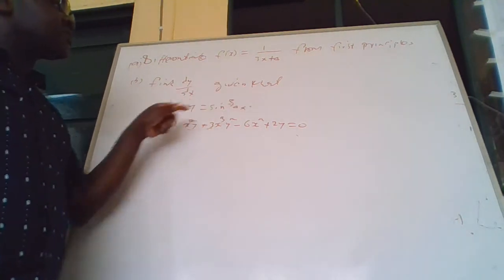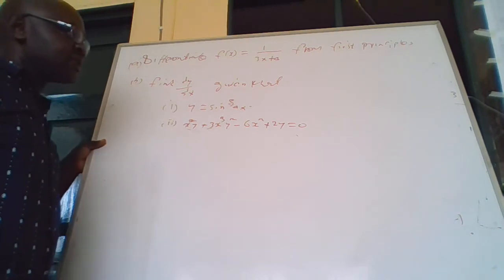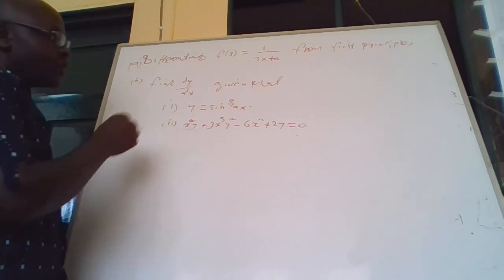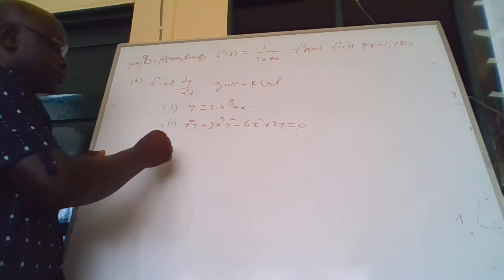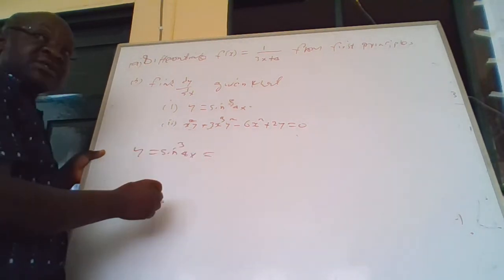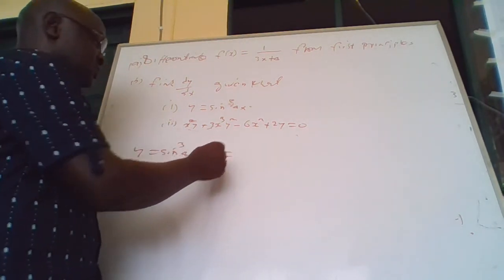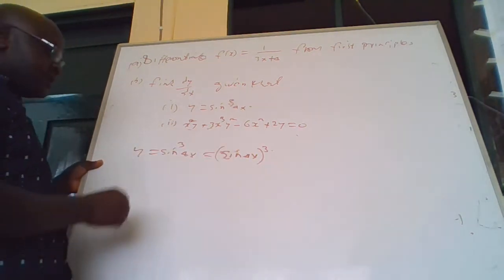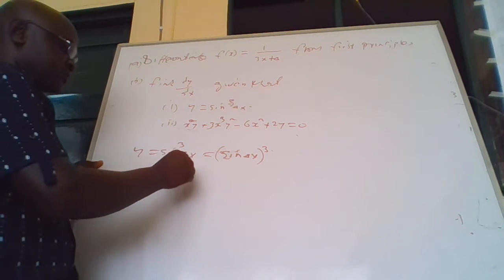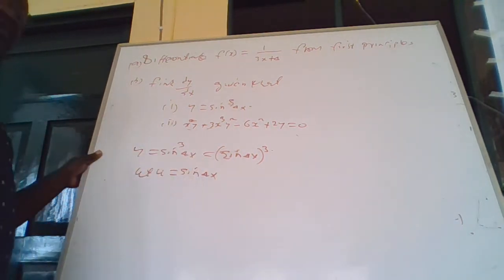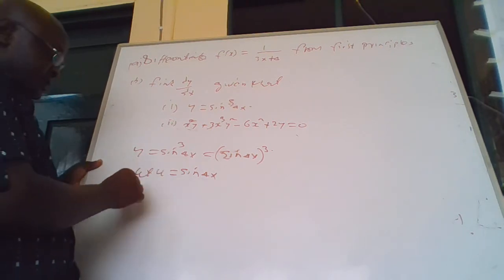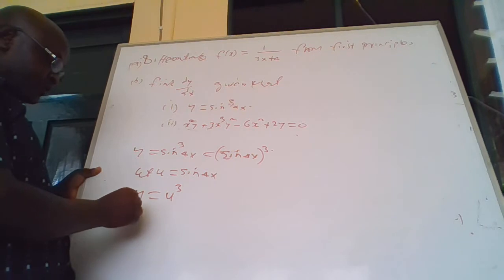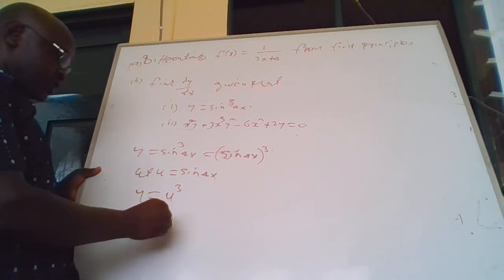Now find dy/dx given that y equals sine 4x cubed. This can be written as y equals sine 4x, raised to the power 3. Let u equals sine 4x. If that is the case, then y equals u raised to 3. Differentiating y with respect to u: dy/du equals 3u squared.